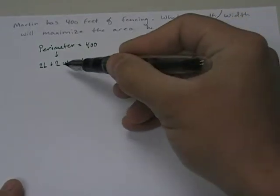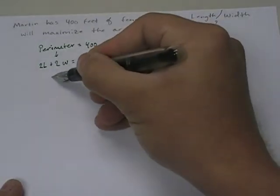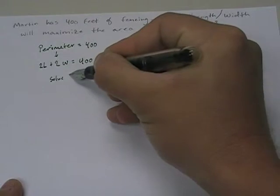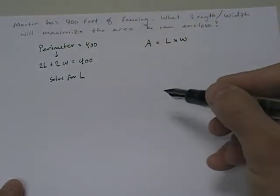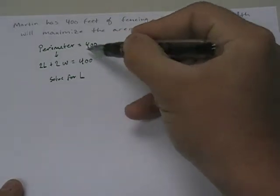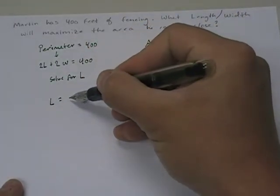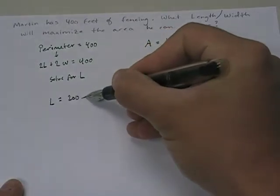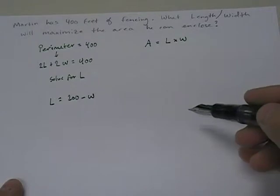I take my perimeter equation and I solve this for L. I want to solve for length. If I do that, I move this guy over, get negative 2W, and then divide by 2. And I get L equals 200 minus W. So solve this for L, get L by itself.